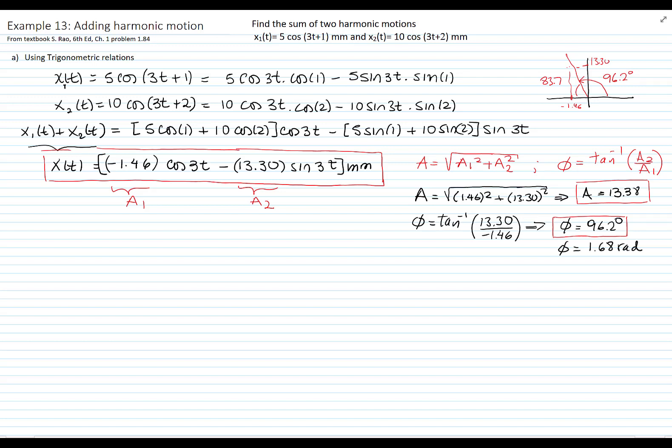So I can write this angle also in radians to be able to write the answer. So I can write the total harmonic motion as 13.38, which is my A, and cosine of 3t plus the phase angle, which is 1.68 radians. That's in millimeters. So here both answers are correct. There's two different ways to present the answer.